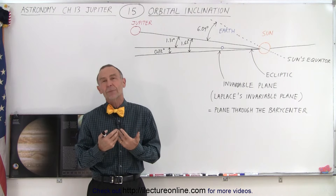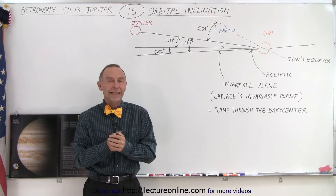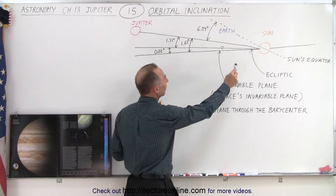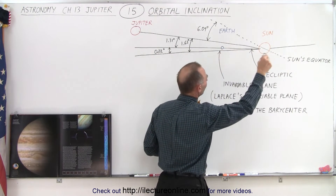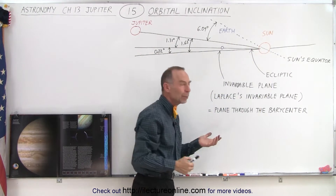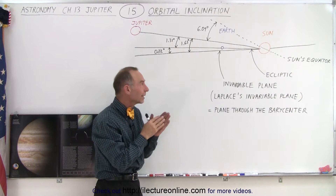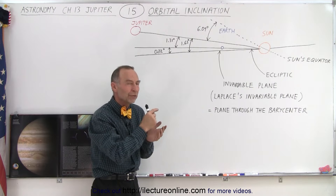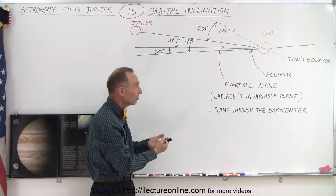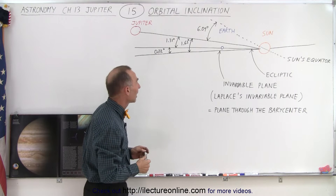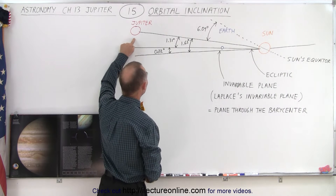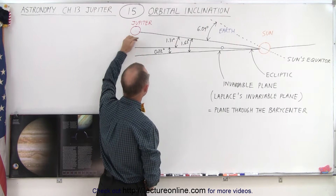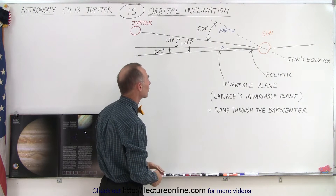The first one, the most common one to most people, is the ecliptic plane. The ecliptic plane is the plane formed by the Earth's orbit around the Sun. Typically we compare the orbital inclination of all the other planets relative to the orbital inclination of the Earth around the Sun — that means relative to the ecliptic. If we take a look at Jupiter, we can see that the orbital inclination between the ecliptic and Jupiter is 1.3 degrees essentially.